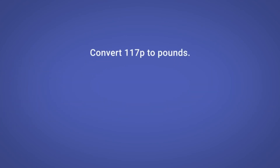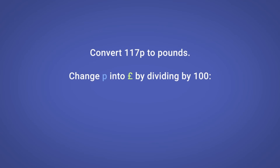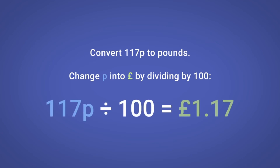Let's take a look at some example questions for converting between units of money. Convert one hundred and seventeen pence to pounds. We can change pence into pounds by dividing by 100. One hundred and seventeen pence divided by 100 equals one pound seventeen.